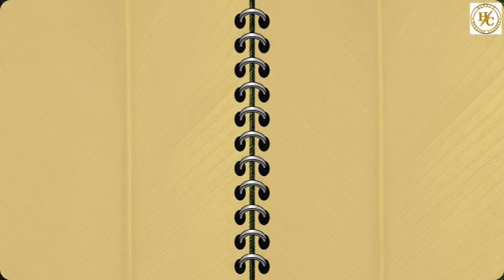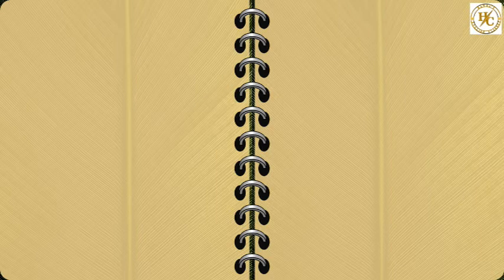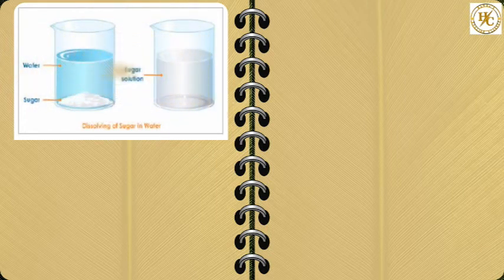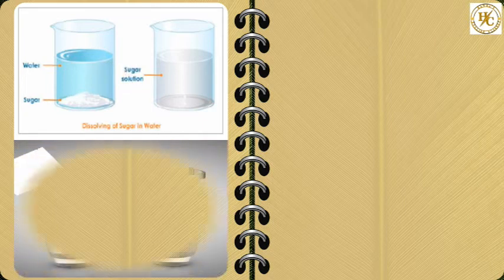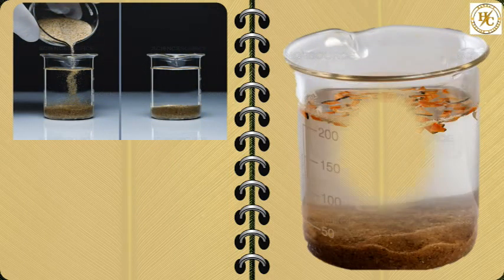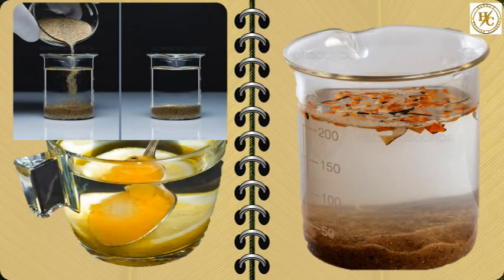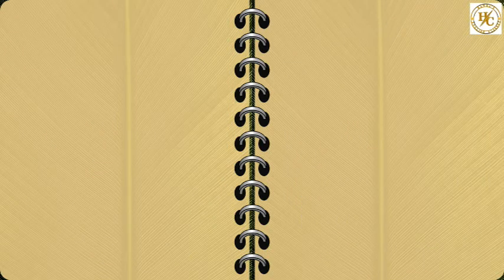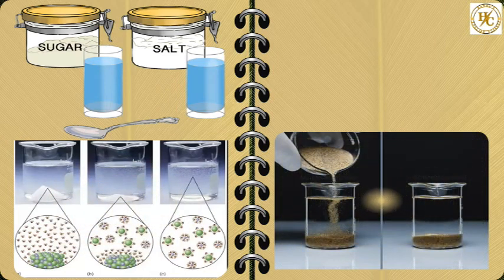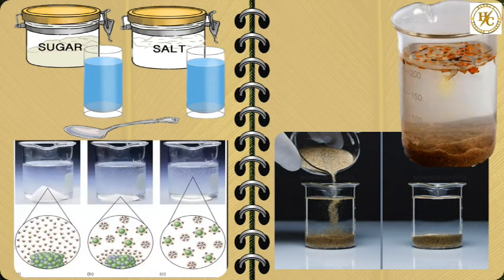Today we will understand some properties of water with examples. If we take some glasses of water and add common salt, sugar, washing powder, sand, sawdust, and turmeric powder in different glasses of water and stir with a stick or spoon, we will see that salt, sugar, and washing powder dissolve in water, while sand, sawdust, and turmeric powder do not dissolve in water.